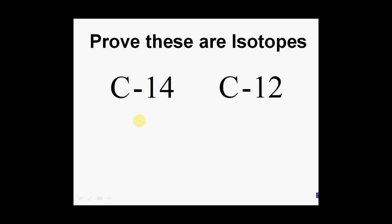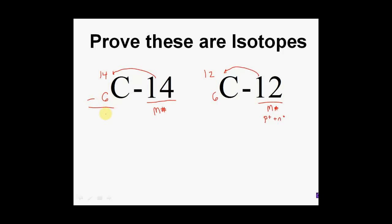How do I know these are isotopes? Just a clarification: the 14 and the 12 are mass numbers — protons plus neutrons. Carbon has 6 protons, so carbon-14 can be written as 14 over 6 carbon, and carbon-12 as 12 over 6 carbon. Doing a quick subtraction: 14 minus 6 gives 8 neutrons, and 12 minus 6 gives 6 neutrons. So it's an isotope — same number of protons, but varying number of neutrons: 8 versus 6.